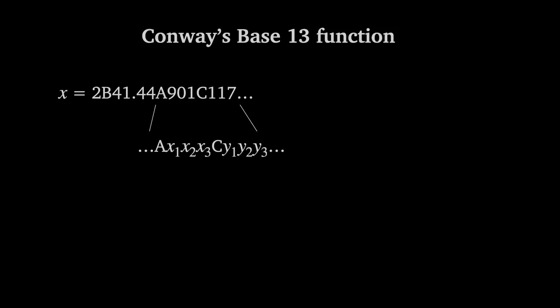And then after C, all digits, potentially out to infinity, are 0 to 9. We'll denote y1, y2, and so on. Then, we call this a type A number.